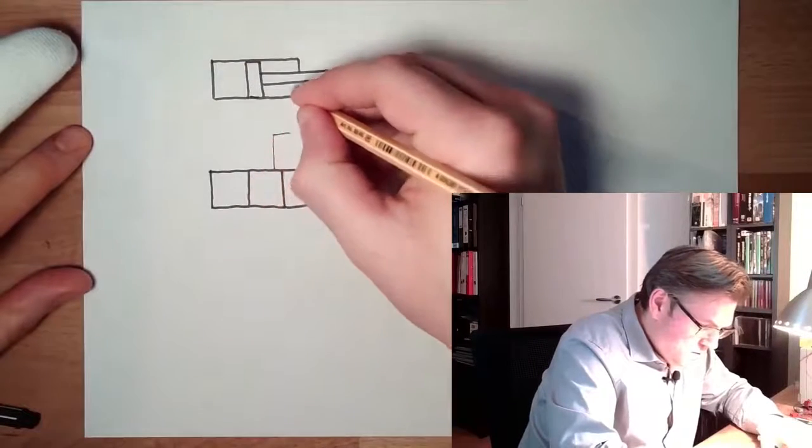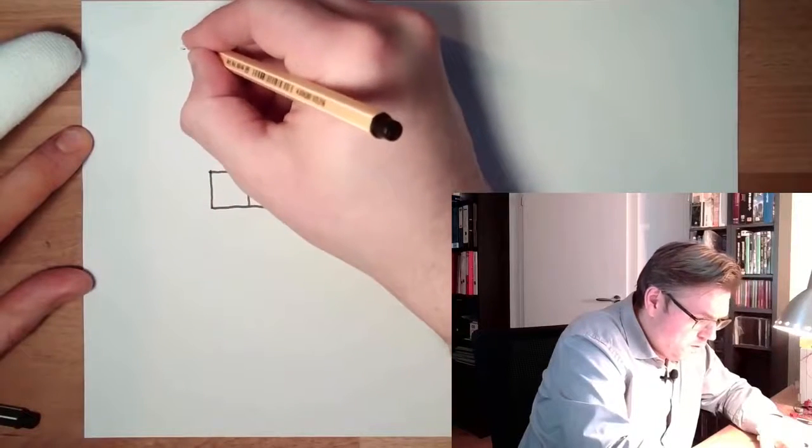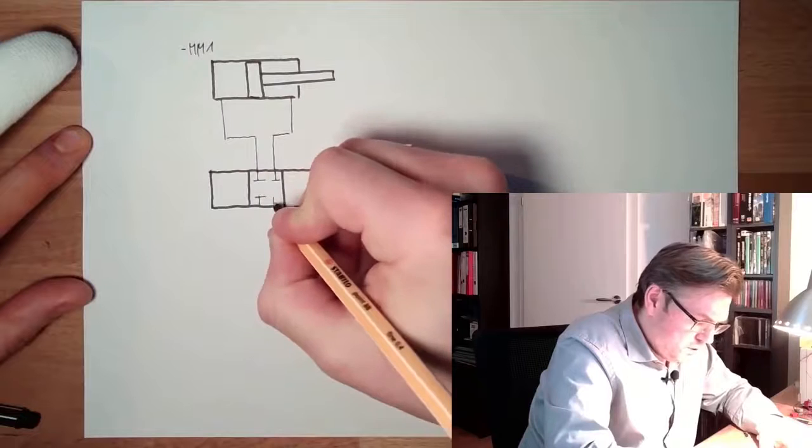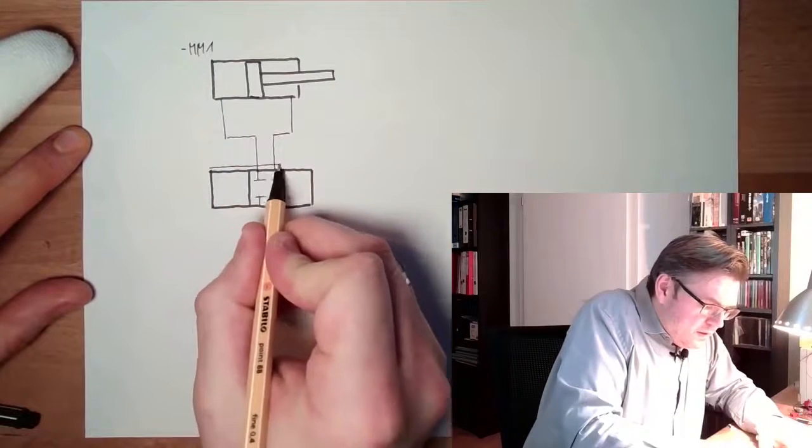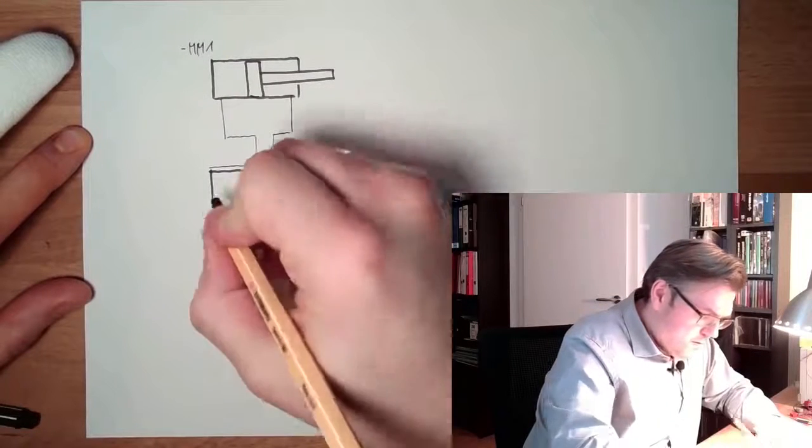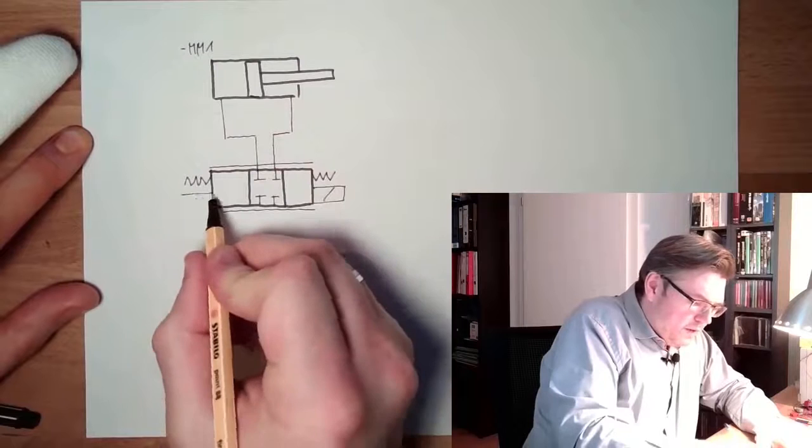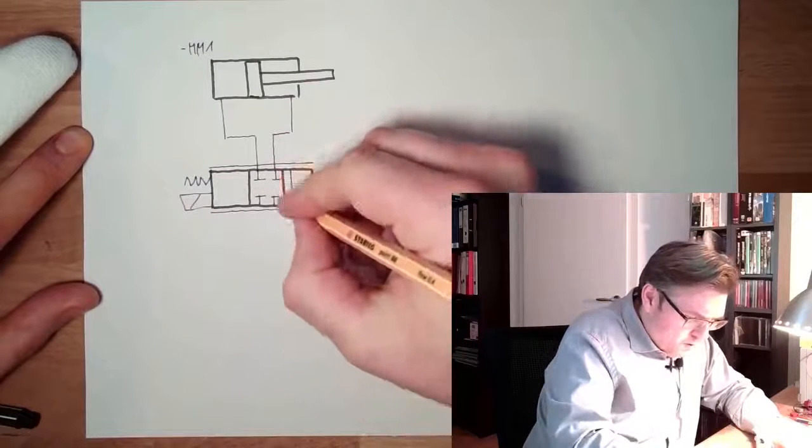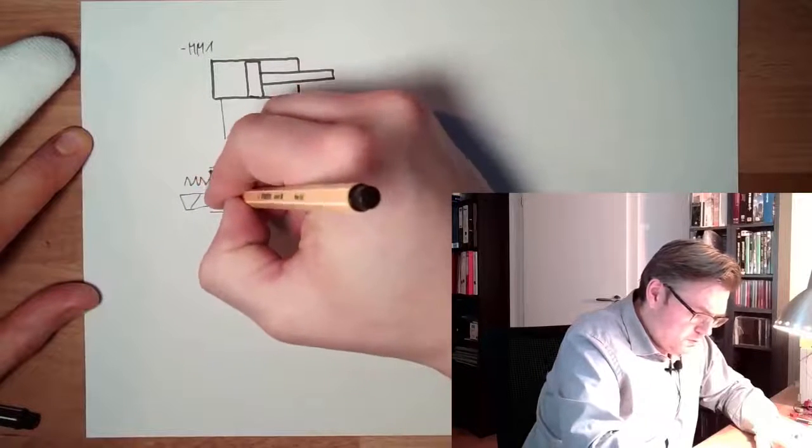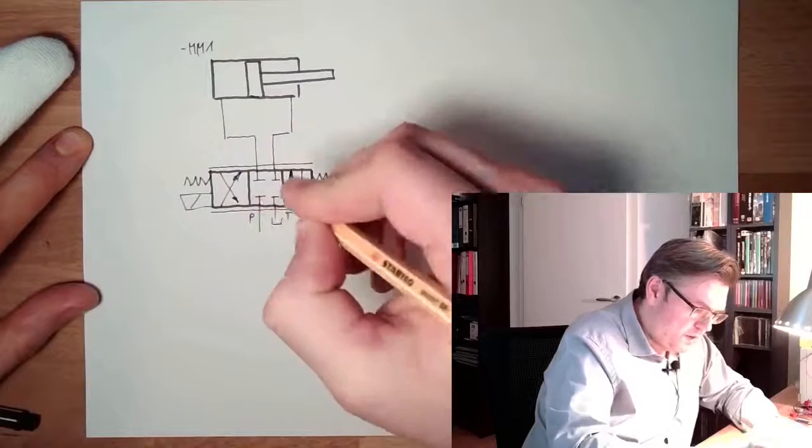This is connected to the cylinder MM1. Here in the middle position, we have blocked position everywhere. And like I said, this is a proportional valve. Middle position with springs operated by proportional magnets. One is straight position, the other one is the cross position. See here we go to the tank, that's the pressure line, that's A and B.